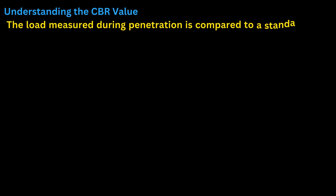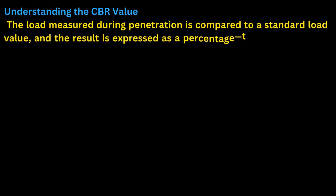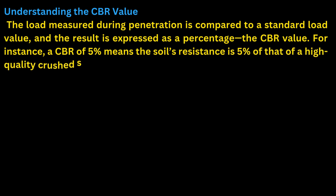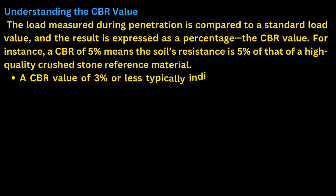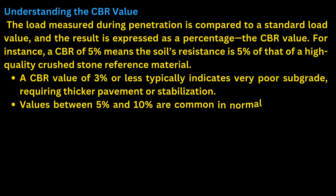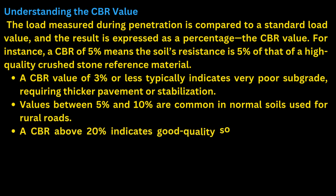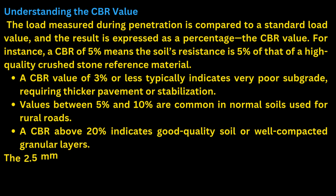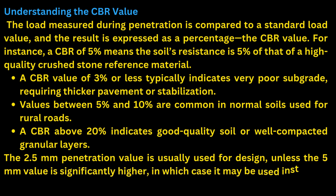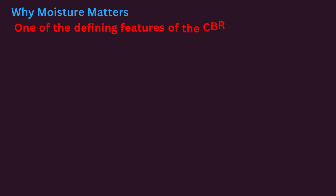The load measured during penetration is compared to a standard load value and the result is expressed as a percentage — the CBR value. For instance, a CBR of 5% means the soil's resistance is 5% of that of a high-quality crushed stone reference material. A CBR value of 3% or less typically indicates very poor subgrade, requiring thicker pavement or stabilization. Values between 5% and 10% are common in normal soils used for rural roads. A CBR above 20% indicates good quality soil or well-compacted granular layers. The 2.5 millimeters penetration value is usually used for design, unless the 5 millimeters value is significantly higher, in which case it may be used instead.